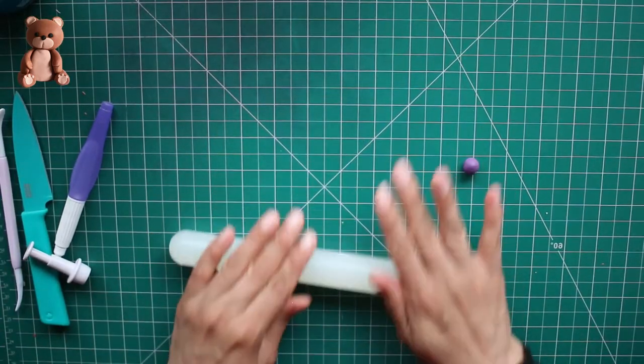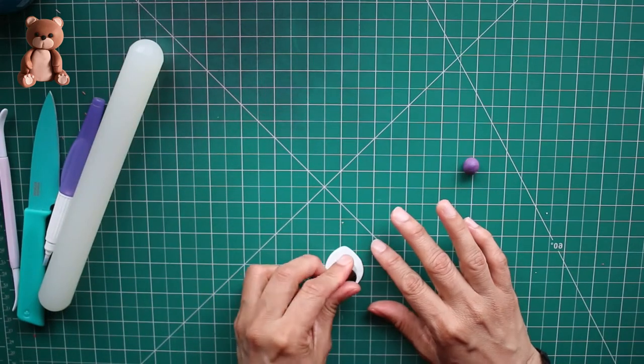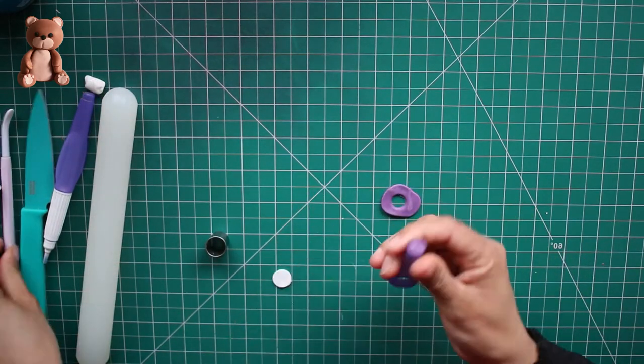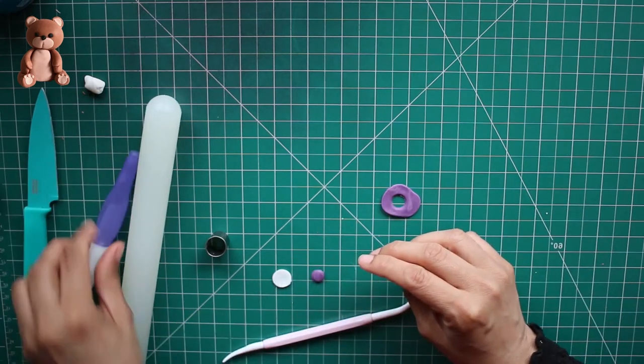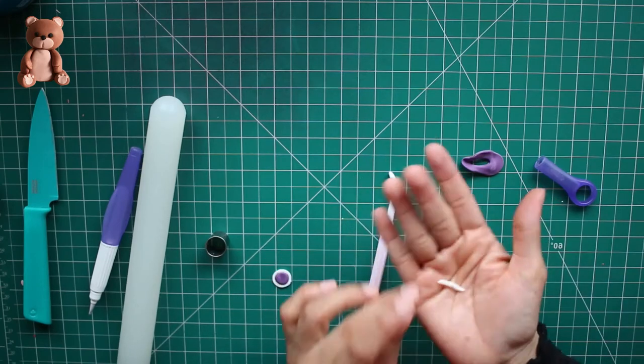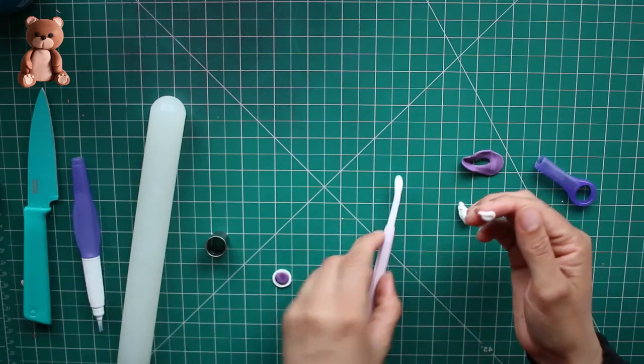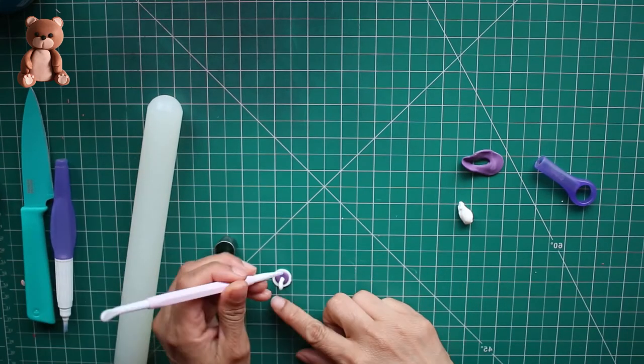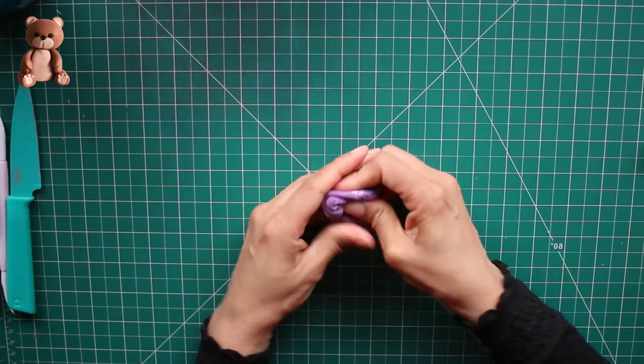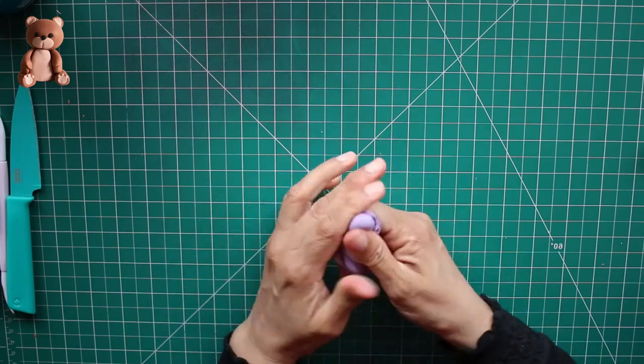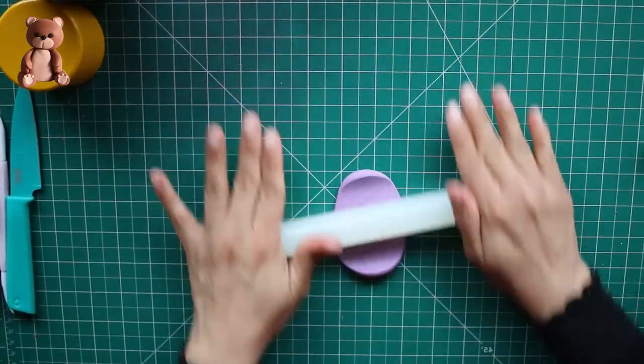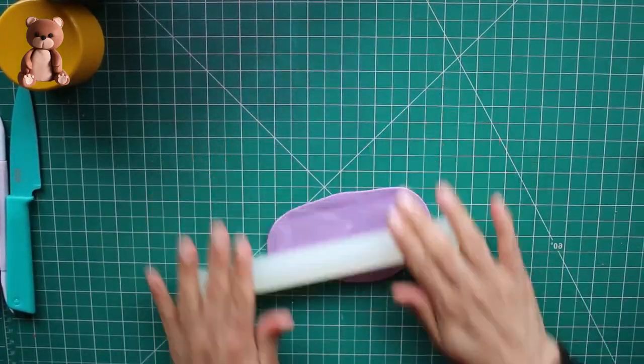Now for a baby shower cake topper or first birthday or welcome baby. This is going to be a dummy or a pacifier or a soother, whatever you want to call it. So that's just by making two circles and a small string joint and put into the top to make a handle. By mixing a little bit of white to the purple gum paste, I have this light purple color here. And I'm going to make a blanket now.